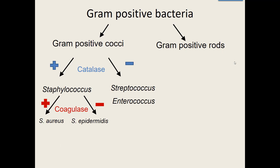The next group of bacteria are still gram-positive cocci and still catalase negative — it's the Enterococcus group. Anything with 'entero' in its name relates to the intestines, so these are intestinally found bacteria. Still cocci-shaped, still catalase negative. As you've got two groups of bacteria that are both gram-positive cocci and catalase negative, there are lab tests to figure out which is which.